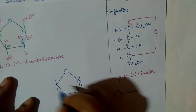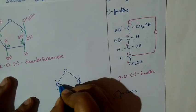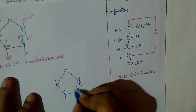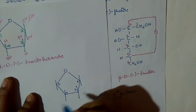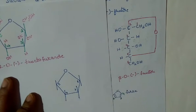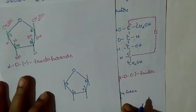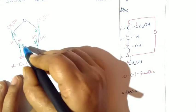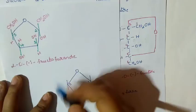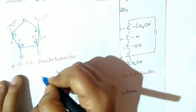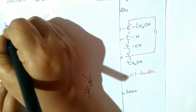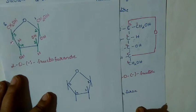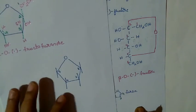So this is our second carbon and this is our fifth carbon. We have second, third, fourth, and fifth marked. This is our first carbon and this is our sixth carbon — total six carbon atoms.